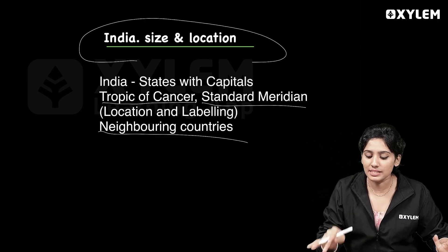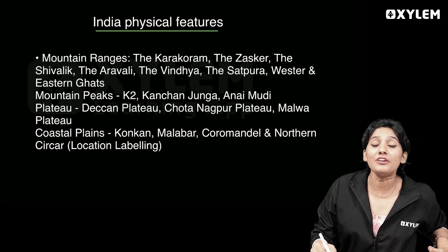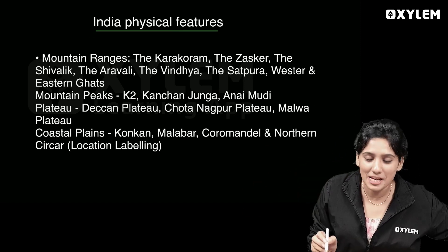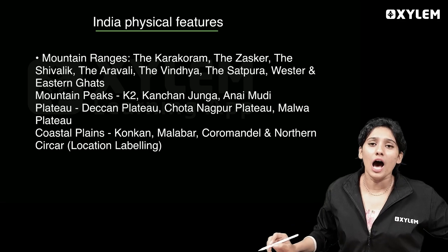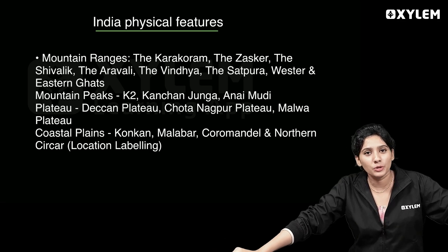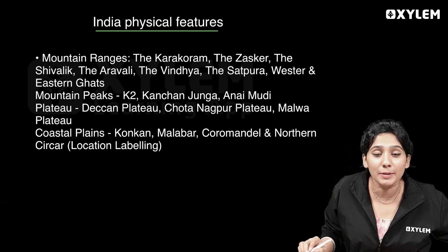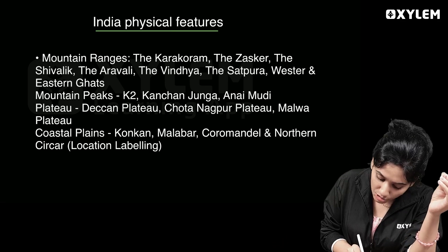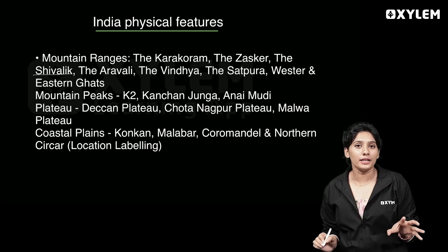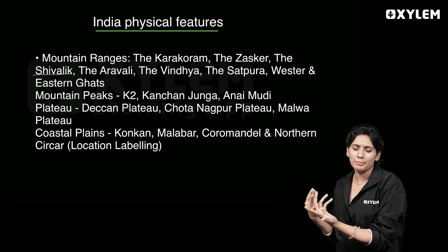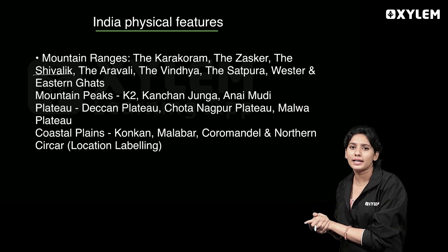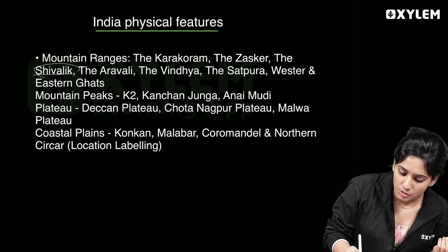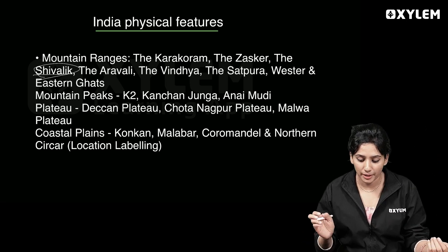In the chapter on physical features of India, there are mountain range map questions. The Karakoram mountain range, Shivalik — which is very important — Lesser Himalaya, and Greater Himalaya are key ranges to identify.